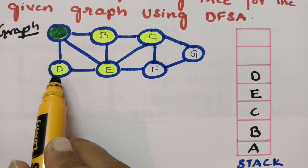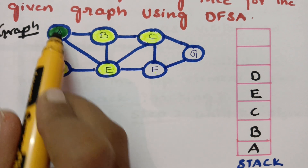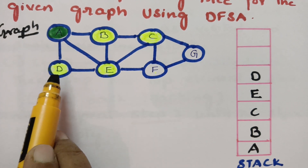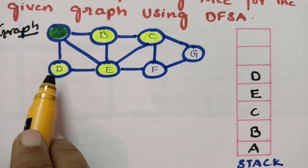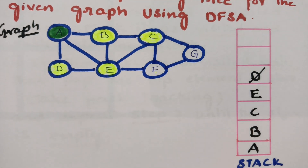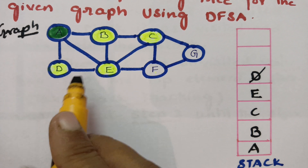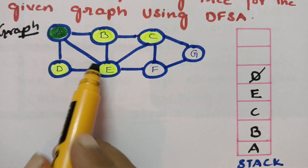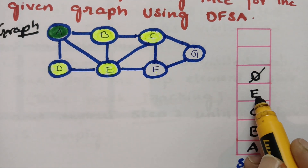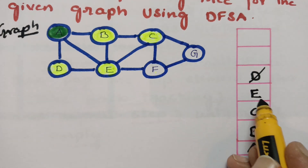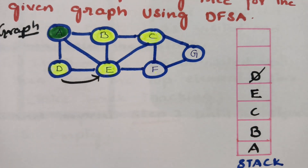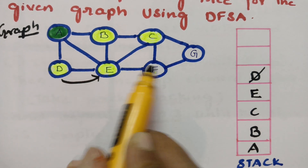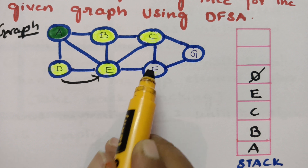Since there are no unvisited vertices from D, we pop the top element from the stack and take backtracking. From the next top element E, we search for any unvisited adjacent vertices. F is an unvisited adjacent vertex of E, so I am visiting F and pushing it into the stack.